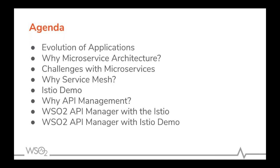Let's look briefly at what we are going to discuss today. We'll start with how applications have evolved, then discuss why microservice architecture is important and what the benefits are. Then we'll discuss the challenges coming with microservice architecture, and how service mesh solves some of these challenges. We'll do a couple of demos: one on using Istio for microservice challenges, and then how WSO2 API Manager integrates with Istio.